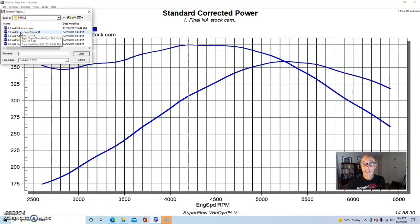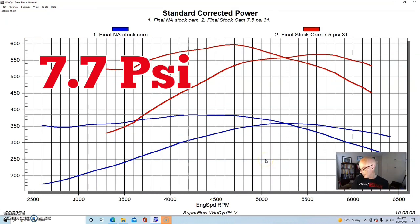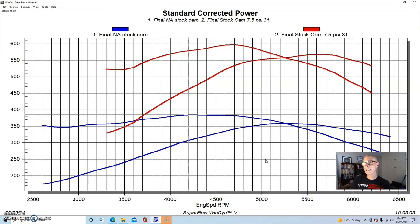With our stock camshaft, this was 7.7, a peak of 7.7 pounds. We also ran this on E85.